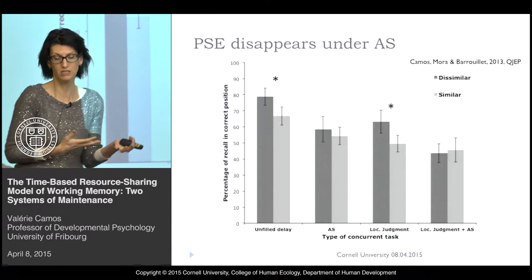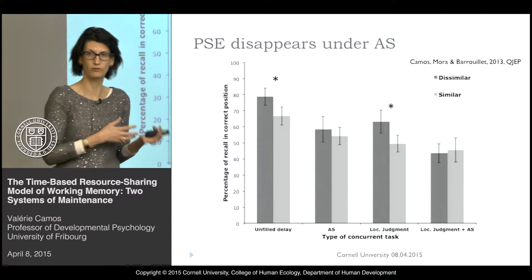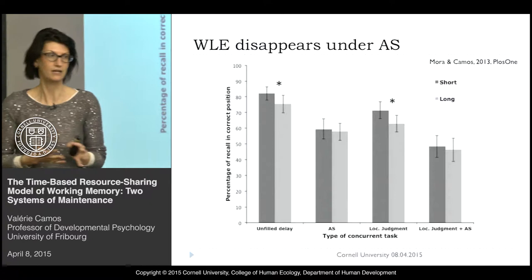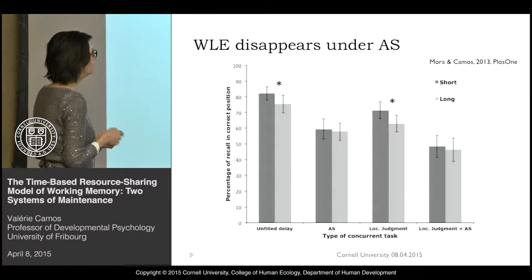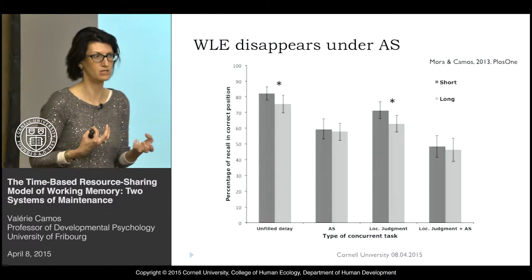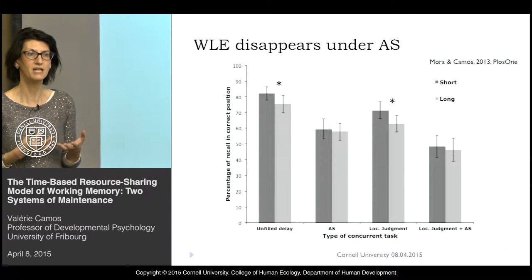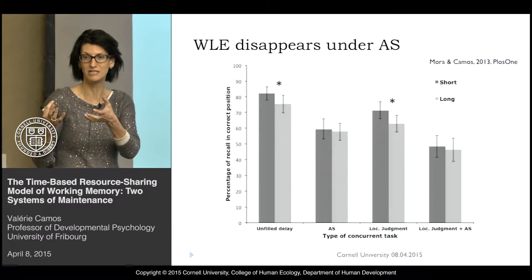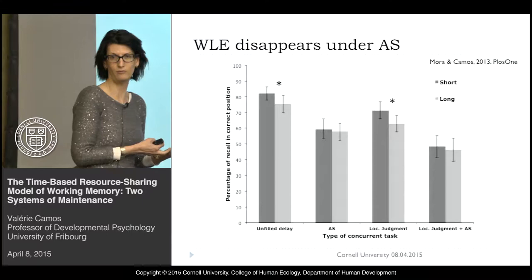When we did the same experiment manipulating word length — presenting lists of short words or lists of long words — it's exactly the same finding. The word length effect occurs only when the task was silent, additively to the manipulation of attentional demand of the concurrent task. This fits with the idea of two independent systems, and also with our idea that maintenance of verbal information is not just the job of the phonological loop or a domain-specific system, but there is really another, more central, way to maintain verbal information.